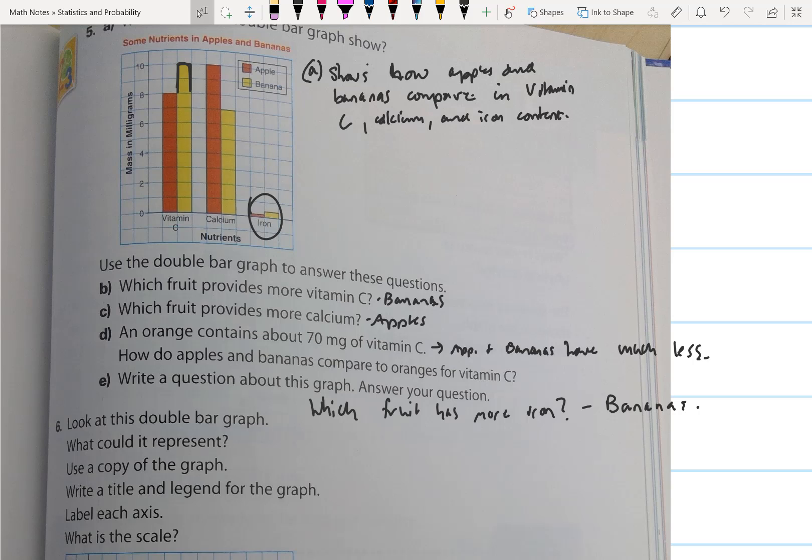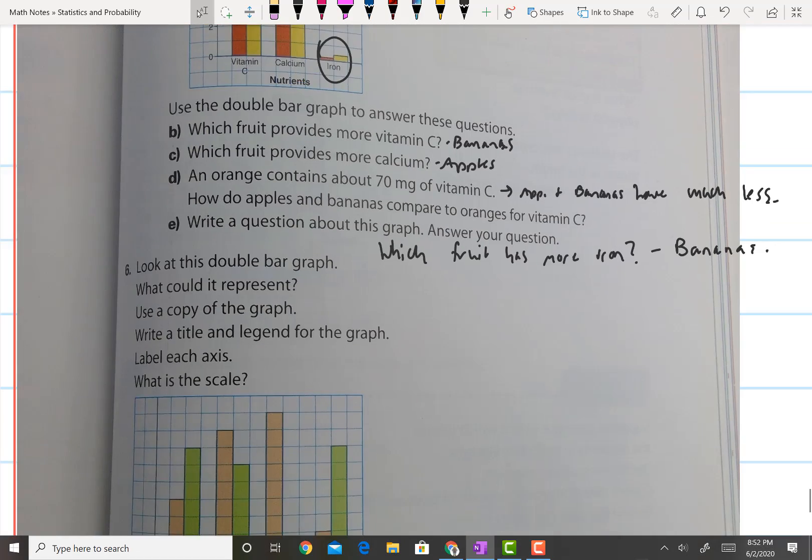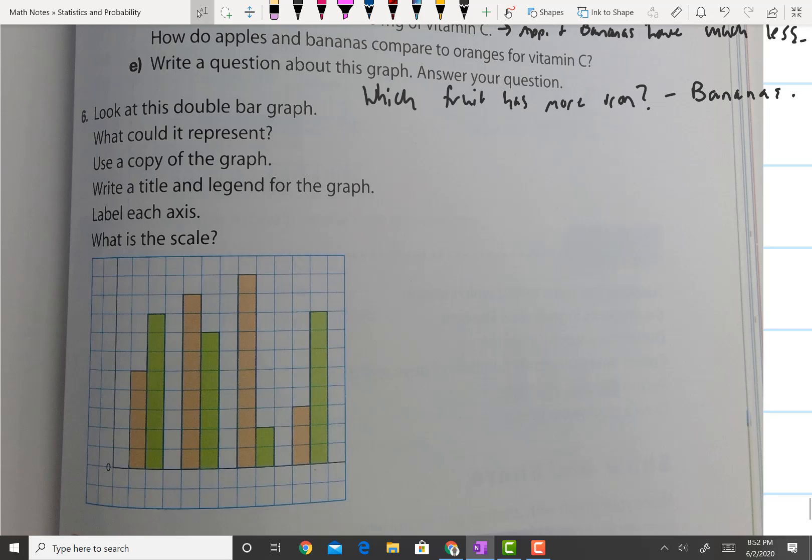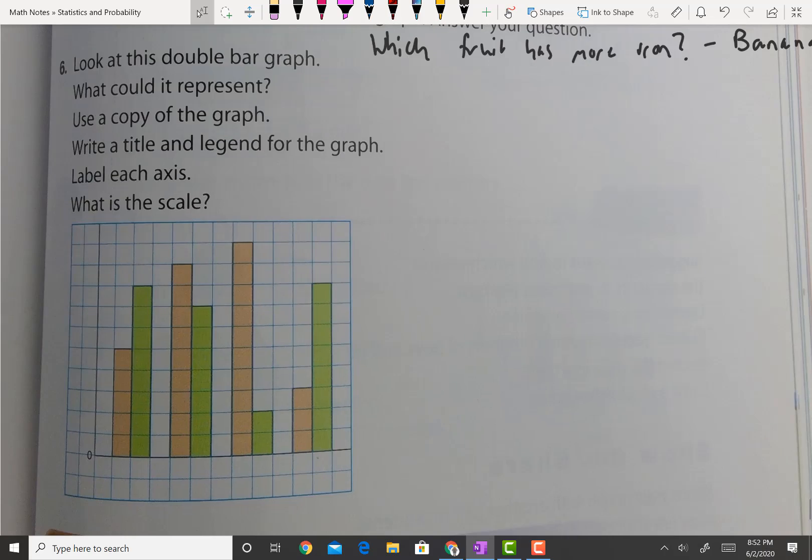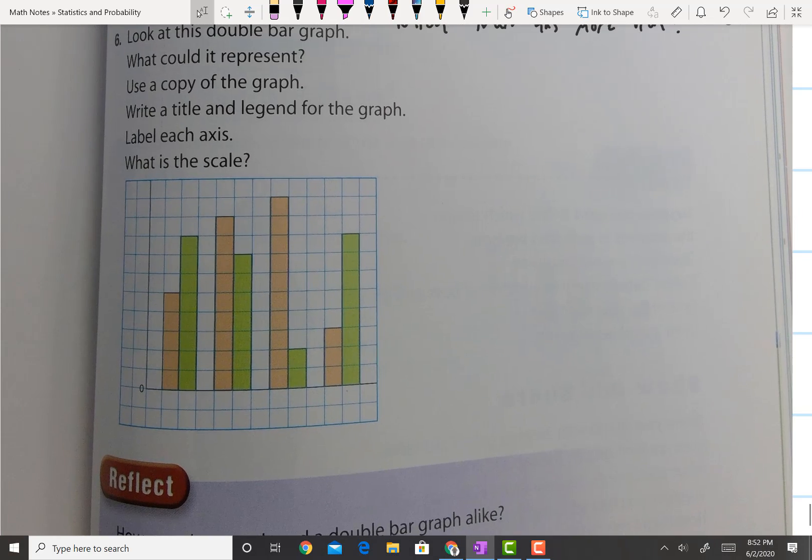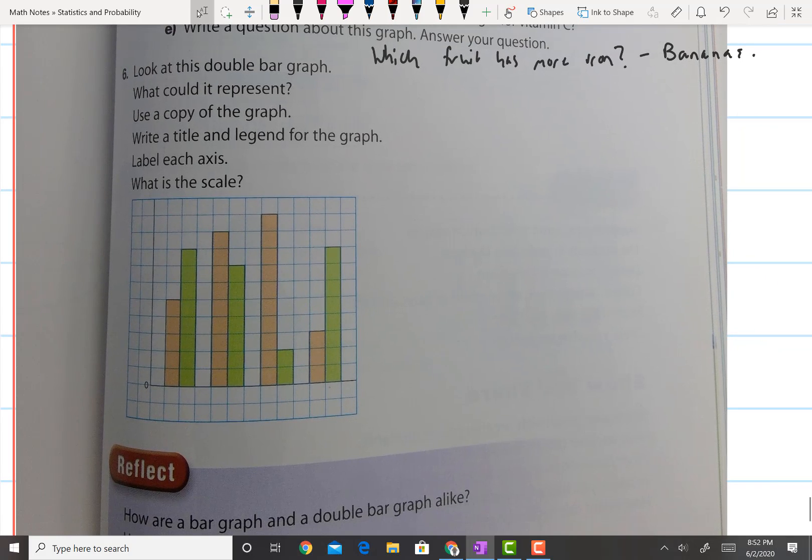Question 6: Look at this double bar graph. What could it represent? Use a copy of the graph. Write a title and legend for the graph and label each axis. What is the scale? Now your answers are going to vary for this question, but they should be similar. Everybody should have the same answer for scale, well that's not true. But here's my answer.